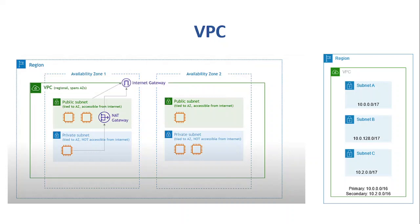AWS VPC allows us to create our own virtual network within the cloud, which gives complete control of all the infrastructure we want to create. It enables us to launch AWS resources such as EC2, RDS, and Elastic Load Balancers within our defined virtual network. So let's start understanding the key concepts of VPC.